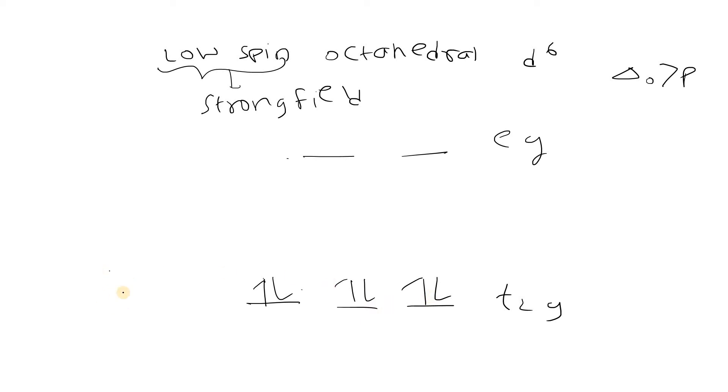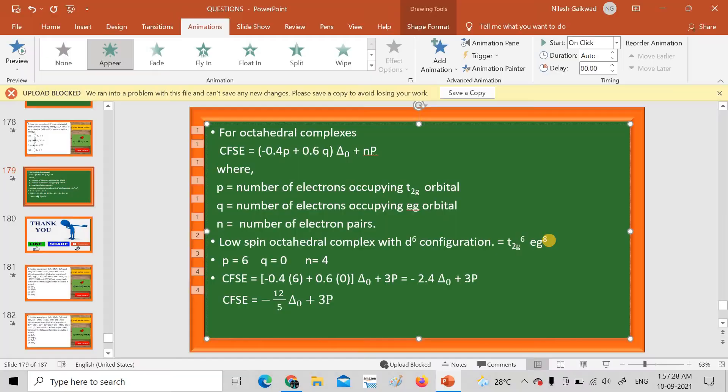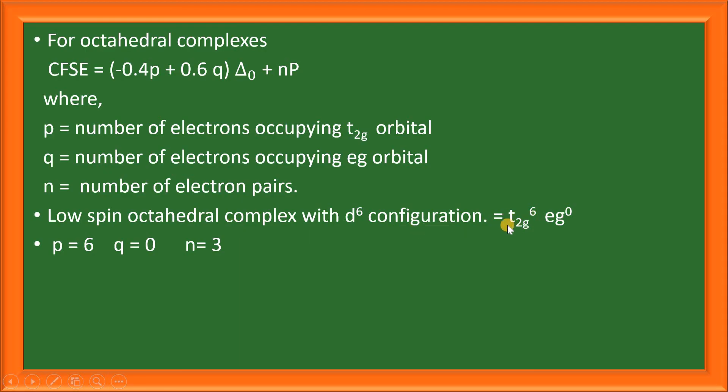This type of arrangement is t2g6 eg0. From the electronic configuration t2g6 eg0, we can conclude that p equals 6, q equals 0, and n equals 3. From the formula, on substituting the values, we get CFSE as minus 12 divided by 5 into Δ0 plus 3P.